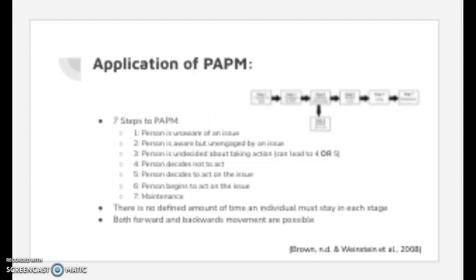Within the Precaution Adoption Process Model, there exist seven stages an individual moves throughout. In the first stage, a person is unaware of an issue's existence. From here, a person moves into stage 2, where they are aware of an issue's existence and may formulate their own opinions, but are not engaged with the issue. Stage 1 and 2 are primarily driven and affected by the media and their portrayal of any specific issues. Next, a person moves into stage 3, where they are now aware and engaged with an issue, but undecided on if they will act.